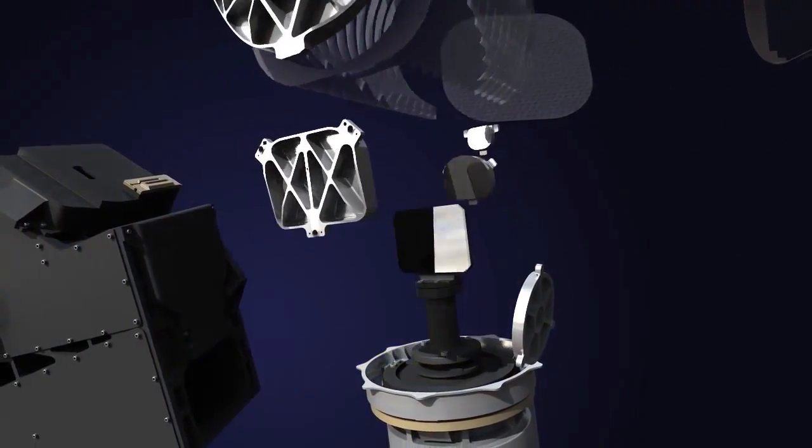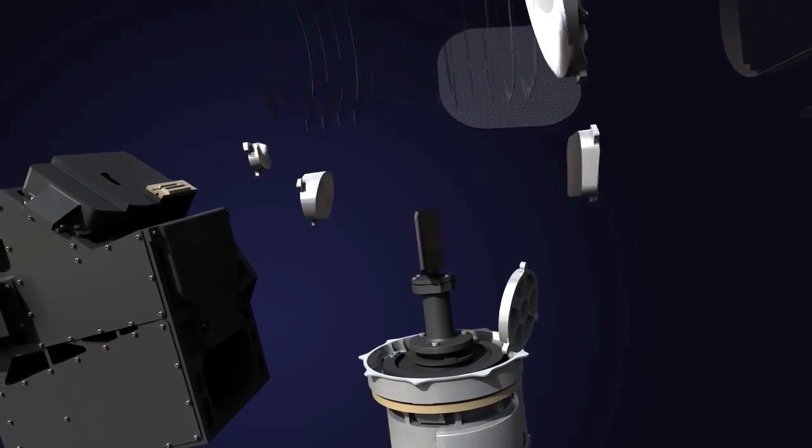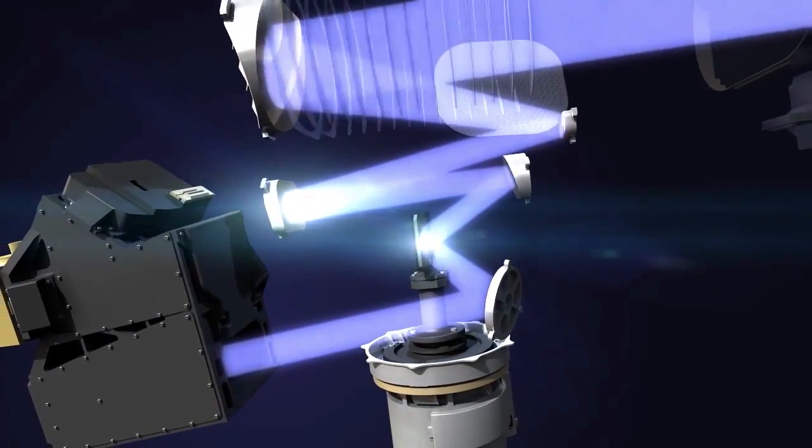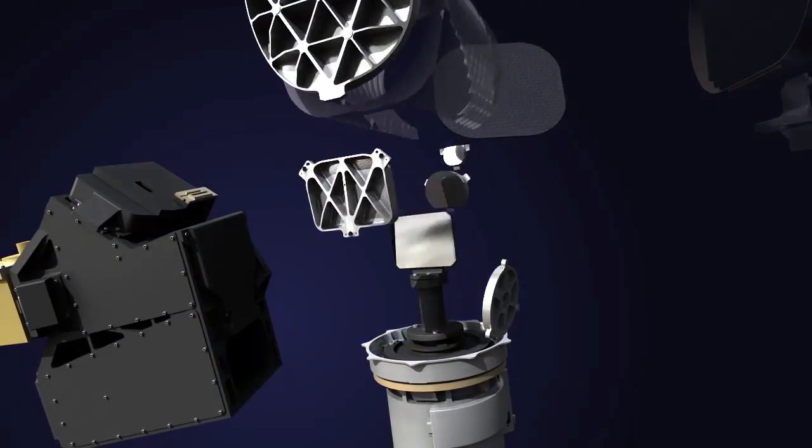A key advantage of the VIRS design is the placement of the primary mirror at the end of a long, baffled tube of the rotating telescope. This shields the optics from scattered light within the instrument.